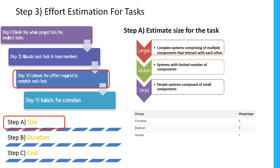To estimate the size of a task, we categorize each task and assign a weightage. If the task is complex, we give a weightage of 5. If the task is medium, we give a weightage of 3. If the task is very simple, we give a weightage of 1. So all tasks are grouped into three categories — complex, medium, and simple — with corresponding weightages of 5, 3, and 1.